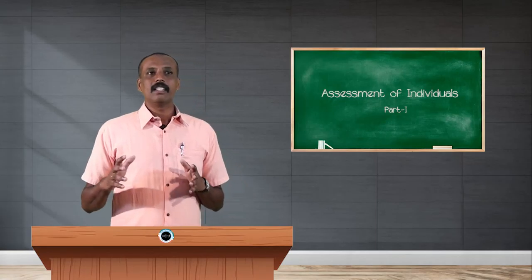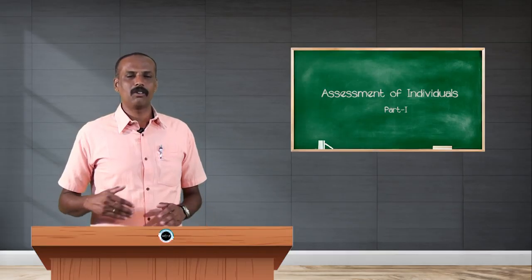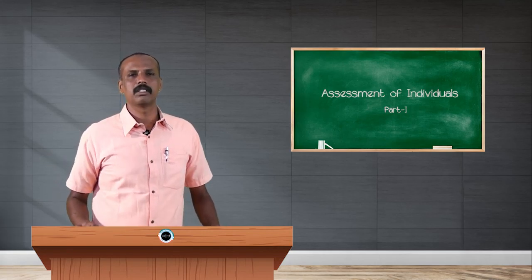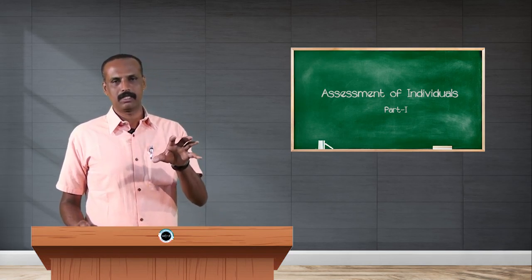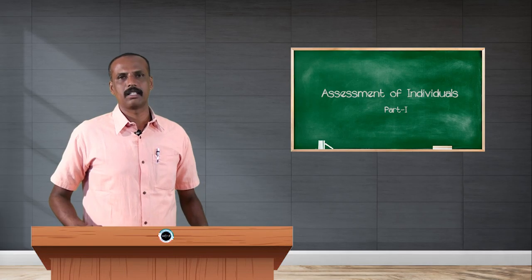Step 5 is rounding off the total income. For example, if the gross total income minus deductions equals ₹40,56,896, the last digits are rounded off to the nearest ₹10. Since 896 is more than ₹5, it rounds up to ₹40,56,900. Another example: if income is ₹3,65,434, the last digits round down to ₹3,65,430. This rounding off of total income is required under the Income Tax Act 1961 for the purpose of calculating tax liability.